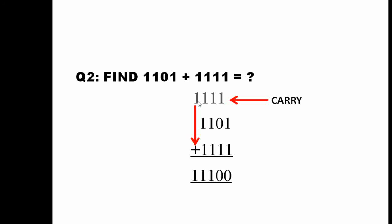Now in the fifth column you only have carry, you have no other numbers. So it will just come down.